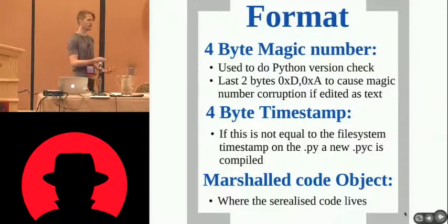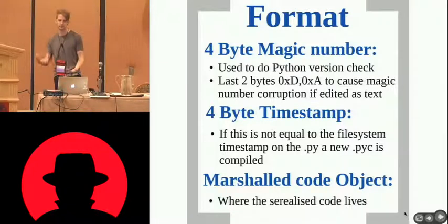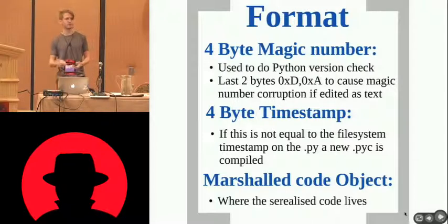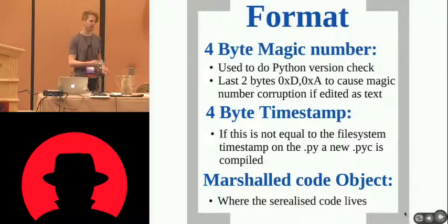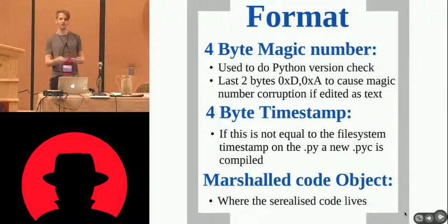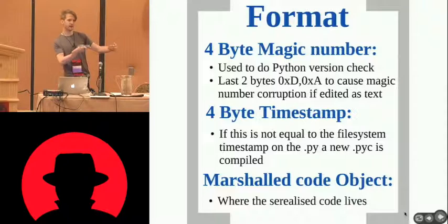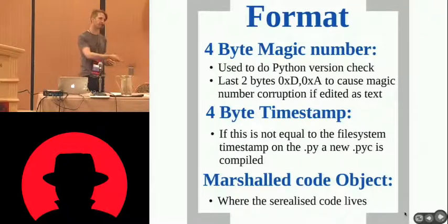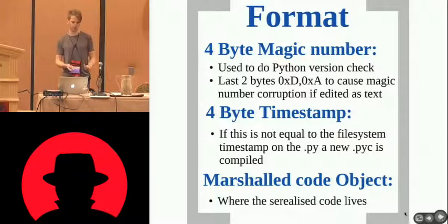Different versions of Python have a different magic number, and they know what number they're supposed to work with, so they won't execute bytecode from a different interpreter. There are also the 0x0D 0x0A bytes in there to purposely break the bytecode if the file has been accessed in a text editor. Then there's a timestamp used to know whether the PYC needs to be regenerated. If there's a PY and a PYC in the same directory and the timestamps don't match, the PYC will be regenerated. It's an equality test, not a greater-than or less-than.